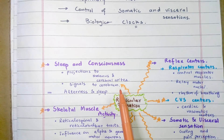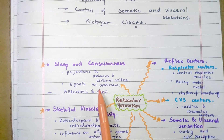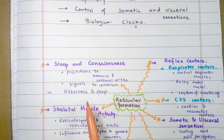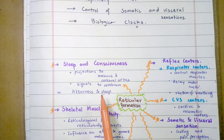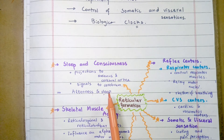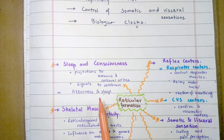Sleep and Consciousness: Reticular formation has projections to the thalamus and the cerebral cortex that allow it to exert control over which sensory signals reach the cerebrum and come to our conscious attention. In this way, it plays a role in the control of alertness and sleep.